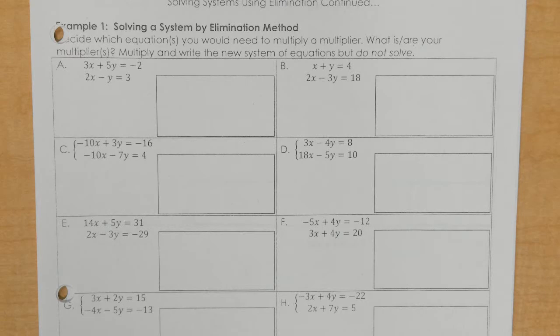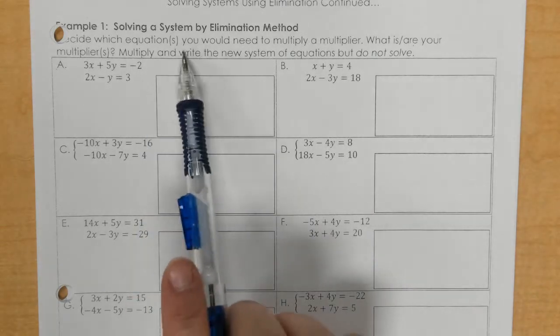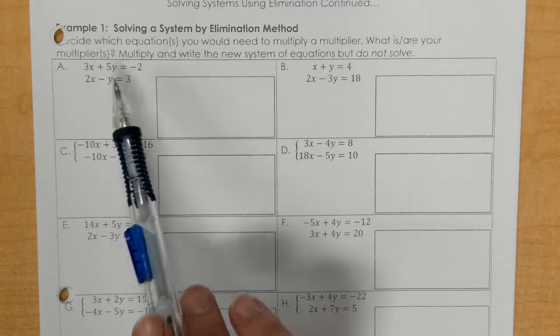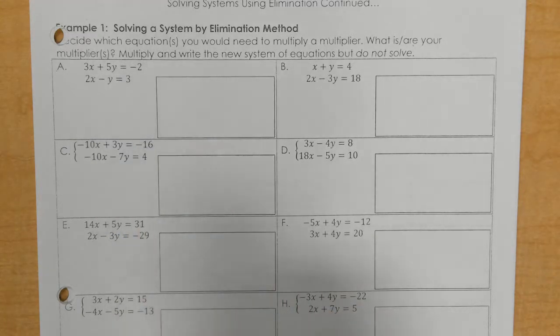For the second day of elimination method, example one is just having you find what you would multiply by one of the equations to make opposite terms. It says decide which equation or equations you would need to multiply by a multiplier. What is or what are your multipliers? Multiply and write the new system of equations but do not solve.